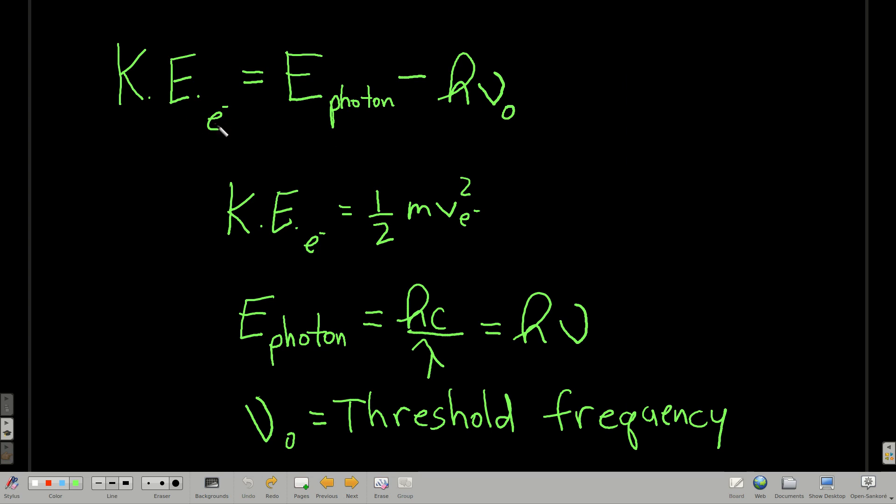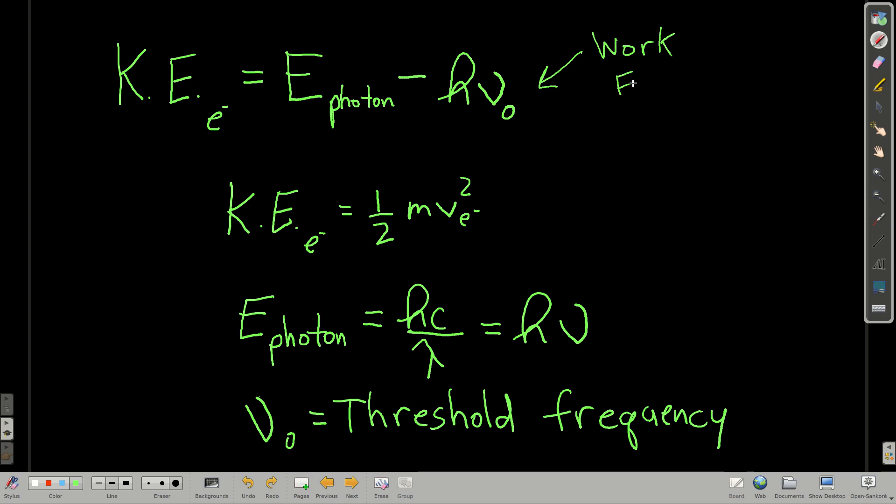Okay, the kinetic energy of the ejected electron, the electron that gets kicked off, if one does, is equal to the difference in energy of the photon that hits that metal and this is called the work function, Planck's constant times the threshold frequency. So if you see the term work function, it just means Planck's constant times the threshold frequency.